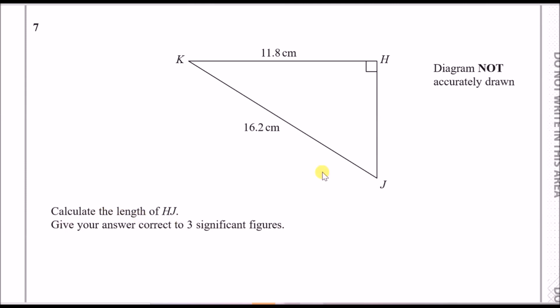Calculate the length of HJ — this unknown we can call x. Give your answer correct to three significant figures. When you see a right angle triangle, always think two things: Pythagoras's theorem, or SOHCAHTOA. You only use SOHCAHTOA if there are angles involved.